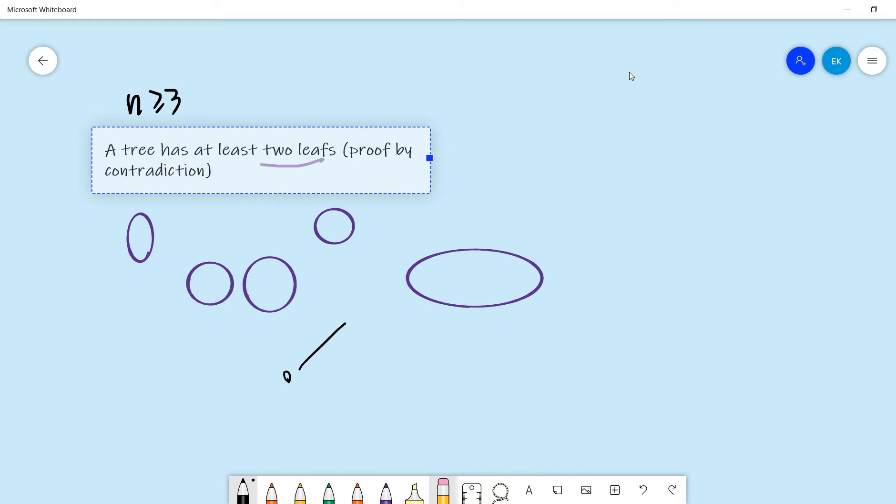Remind you guys that the leaf means that the degree at this point is only one, right? So if the degree for this point is only one, it's called leaves. And the tree...